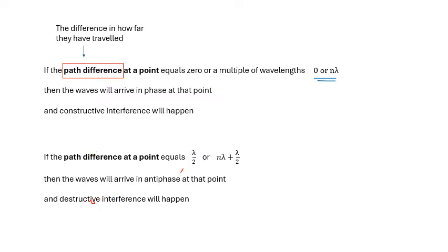If the path difference is half a wavelength, or a wavelength plus half a wavelength, or two wavelengths plus half a wavelength — in other words, half a wavelength added to any whole number of wavelengths — then the waves will arrive in antiphase and you will get destructive interference.